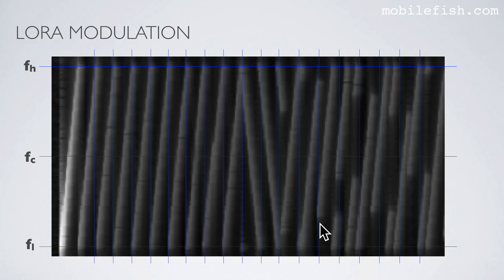As you can see, this symbol starts at this frequency, goes up, and when its highest frequency is reached it jumps to its lowest frequency and the frequency increases till here. And the next symbol starts at this frequency and the frequency increases till its maximum frequency.